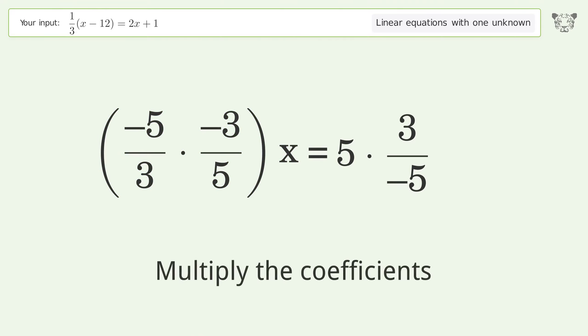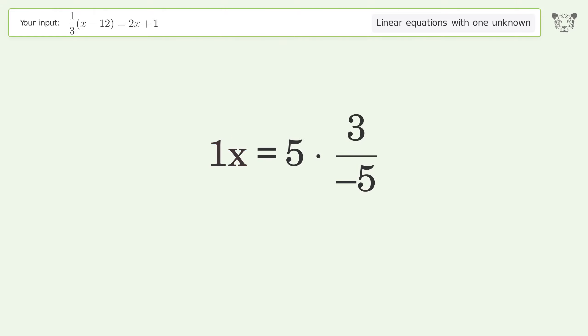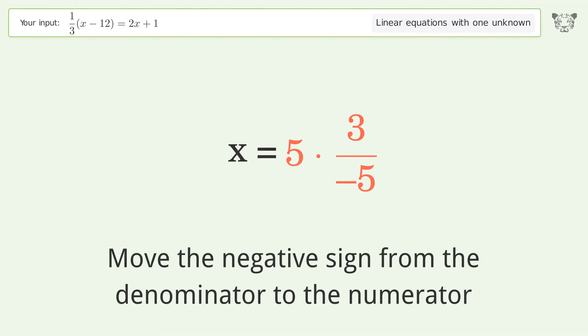Multiply the coefficients. Simplify the arithmetic. Move the negative sign from the denominator to the numerator.